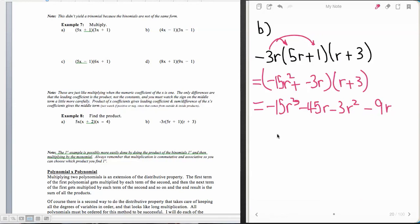Okay, and so now what we have is we have like terms here and here and an unlike term here. And so negative 15r cubed and we have minus a 3r squared.